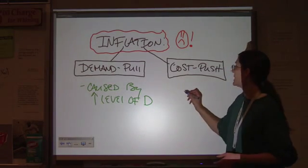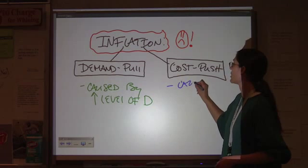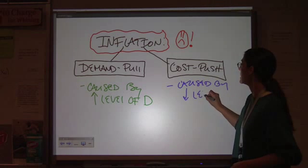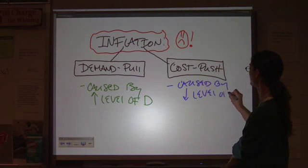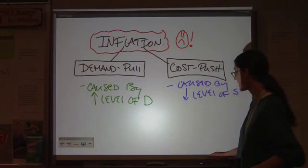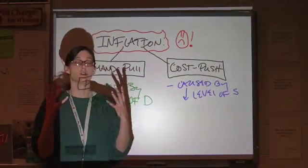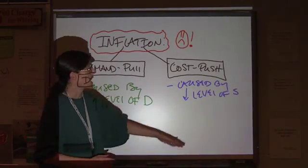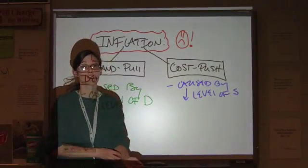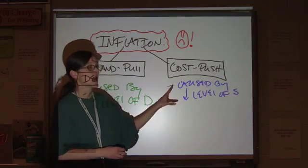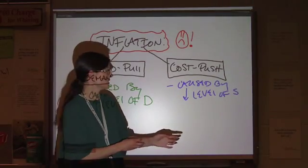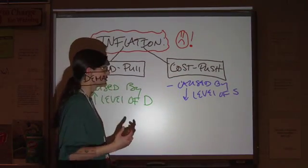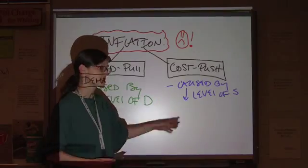Cost push inflation means it's caused by a decrease in the total level of supply. Again, we're talking about if we add together all the supply curves for everything that is produced in the whole economy and something happens that causes that to decrease, then that can cause inflation driven by an increase in costs. Now, what is the most common example that we see of this?